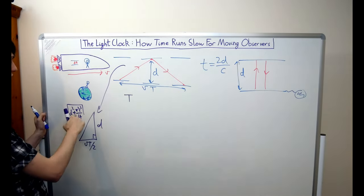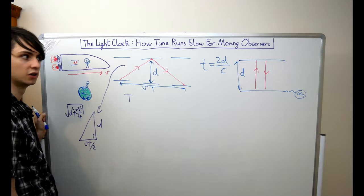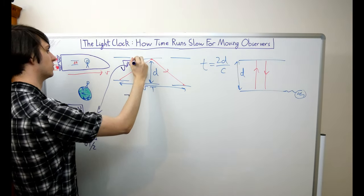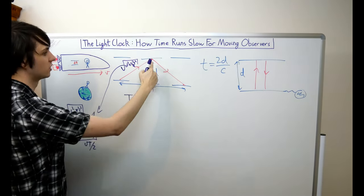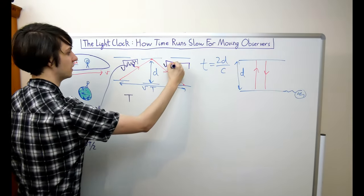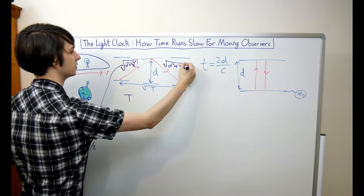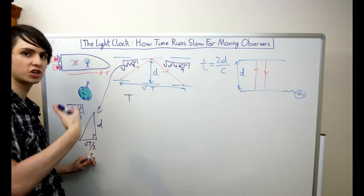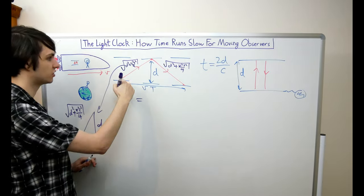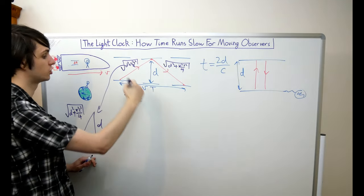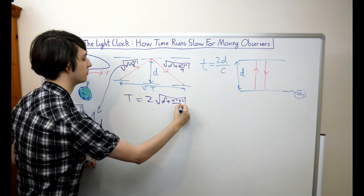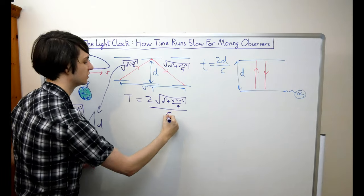So this length here is the square root of d squared plus v squared T squared over four, and because this triangle is exactly the same as the other one just flipped, the other red segment has the same length. So the time between ticks of the light clock as measured by the observer on earth, capital T, is just the total distance traveled by the light beam — two lots of that square root — divided by the speed of light c.